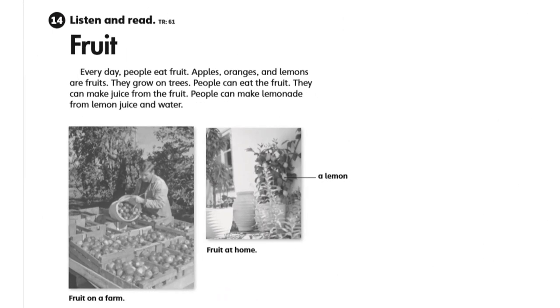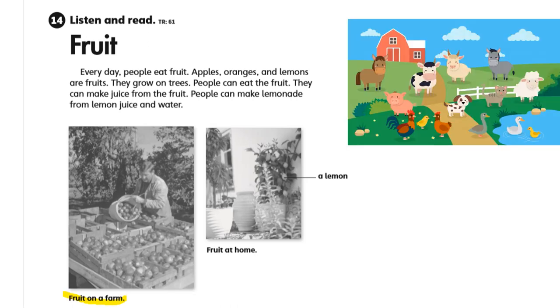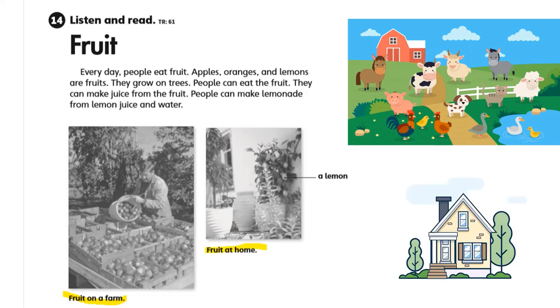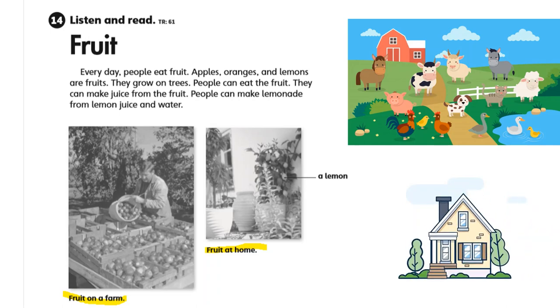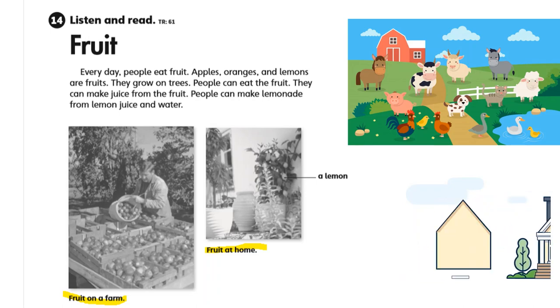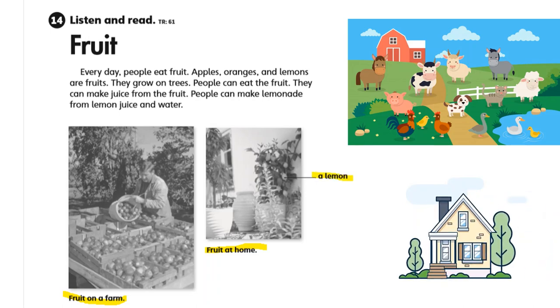Now I want you to look at the pictures. This one says fruit on a farm. This is a farm. Sometimes people plant fruit trees on farms so they can have fruit. And this one says fruit at home. Sometimes people have fruit trees in their houses so they can have fruit. For example, in this house they have a lemon tree.